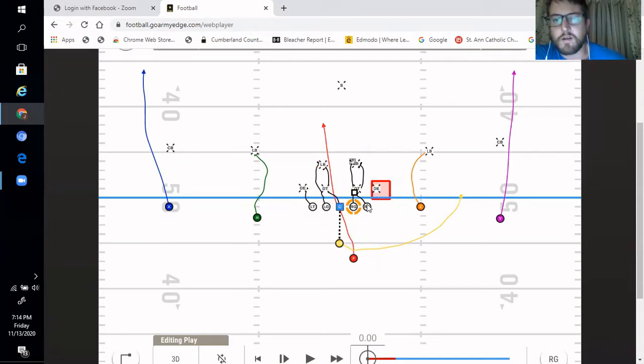The same goes for the backside guard and backside tackle. They are double teaming the defensive tackle with their eyes towards this nearest linebacker. And whichever way that linebacker breaks determines whether the guard or tackle breaks off their block.